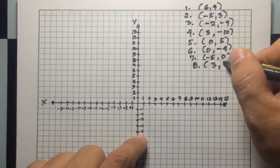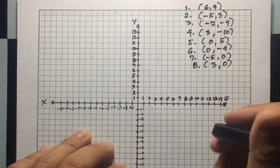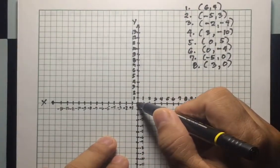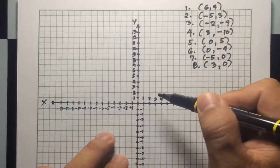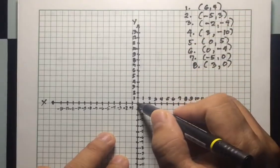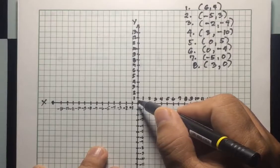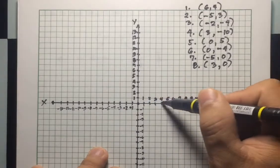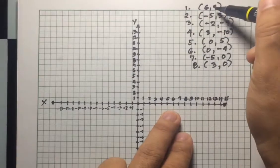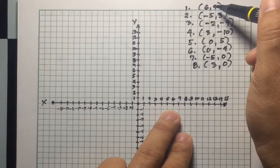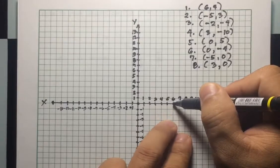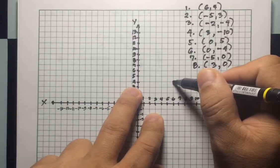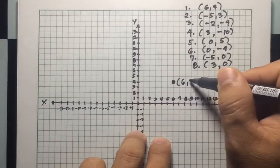For number one, the point is (6, 4). The starting point is the origin. X is 6, which is positive, so move towards the right six units: one, two, three, four, five, six. Y is 4, which is positive, so move upward four units: one, two, three, four. This is point (6, 4).